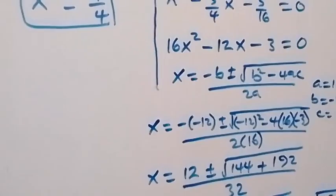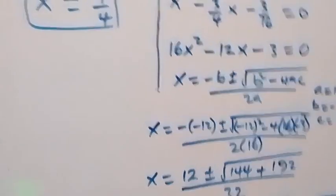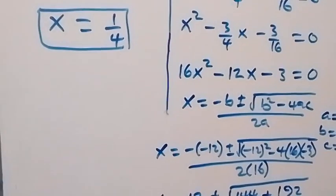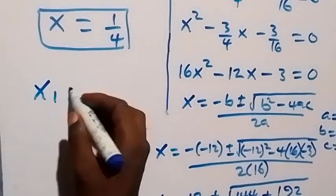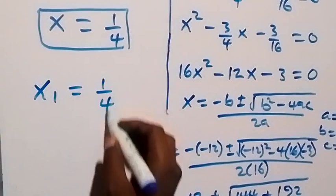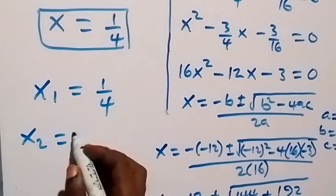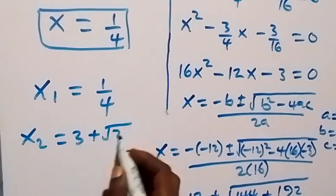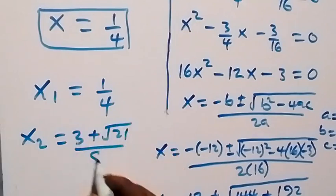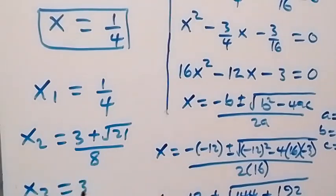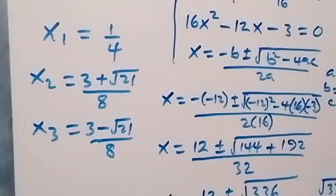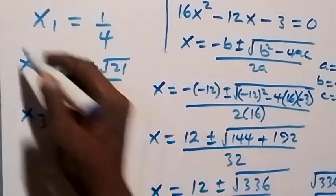All together we have three solutions. The first one: x1 equals 1 over 4. Then x2 equals 3 plus root 21 over 8. And the third one, x3 equals 3 minus root 21 over 8. So all together we have these three solutions.